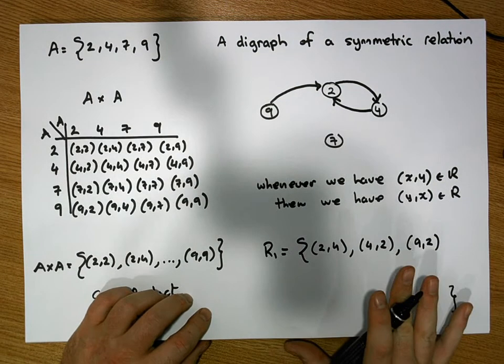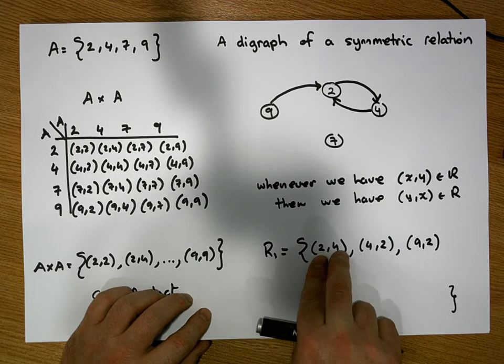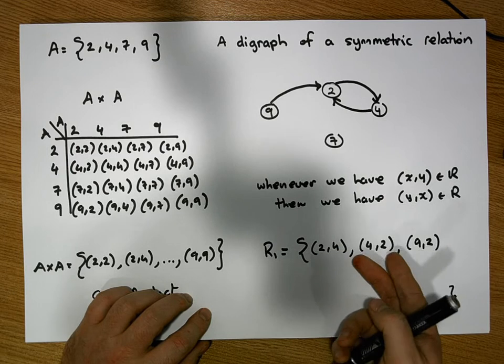Now, is this relation now symmetric? Well, the answer is no. It does contain (2,4), and we can go from 4 back to 2.